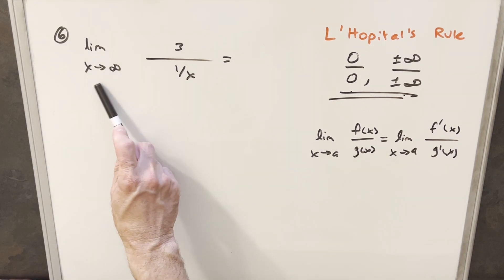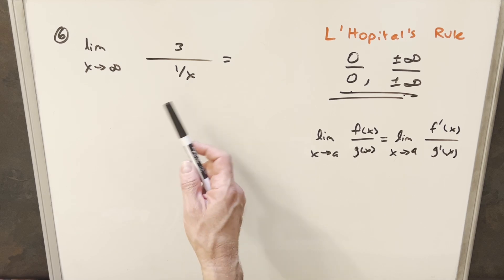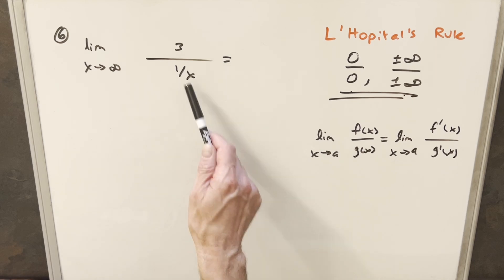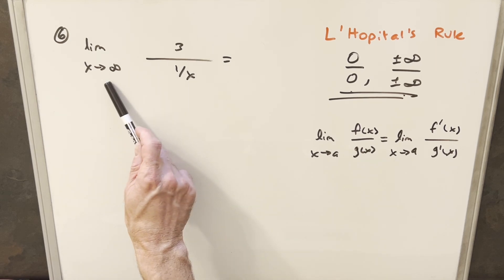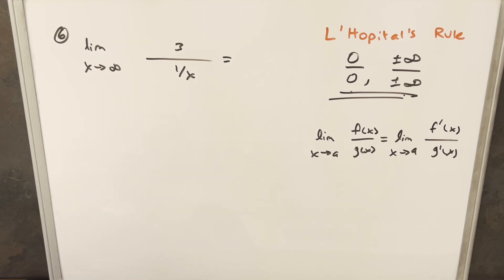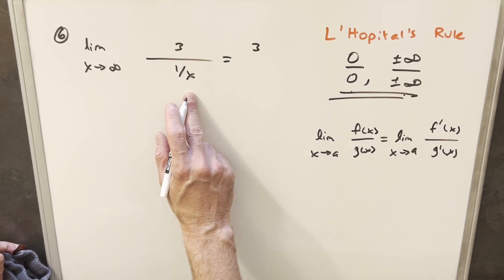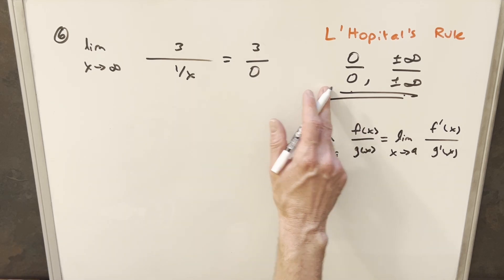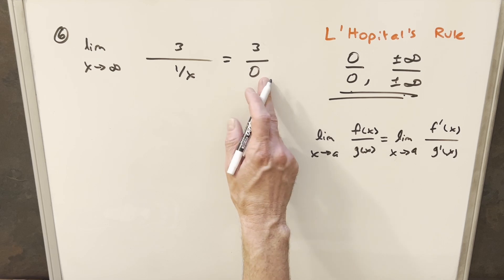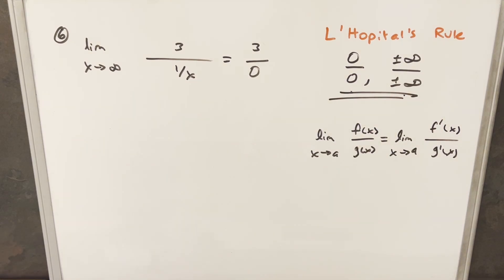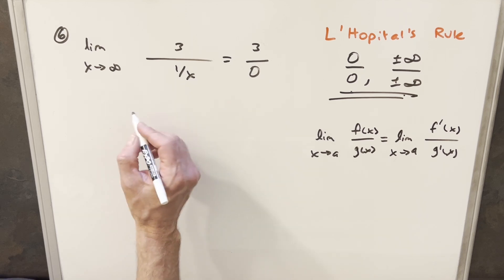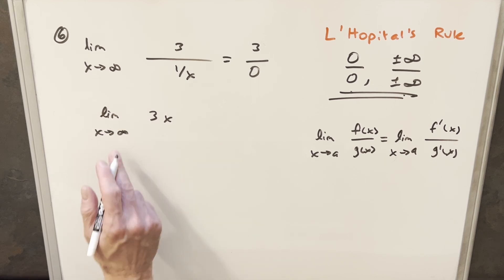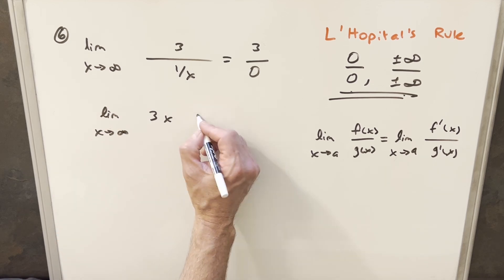Problem 6: the limit as x approaches infinity of 3 over 1/x. You could rearrange this and write it as 3x, but let's deal with it as a fraction. The numerator is 3, and as x approaches infinity the denominator approaches 0. This is 3 over 0, which is not an indeterminate form — it's not one of the two cases for L'Hôpital's Rule. If we write it as 3x and evaluate at infinity, the limit is just going to infinity.